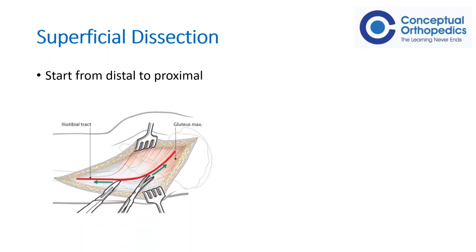The way to perform superficial dissection is to start distally and go proximally. This is because it is much easier to do a stab incision of the iliotibial band up to the greater trochanter and then have a blunt dissection to split the gluteus maximus in line with the fibers. Please note it is not advisable to do a sharp dissection of the gluteus maximus — it is always better to do a blunt dissection in line with the fibers.